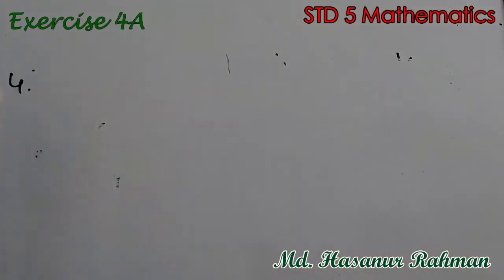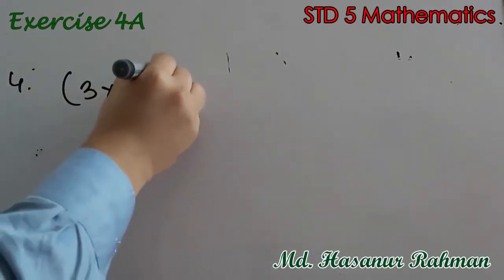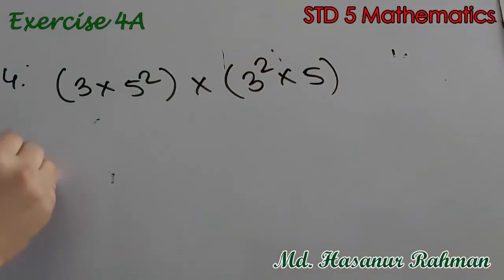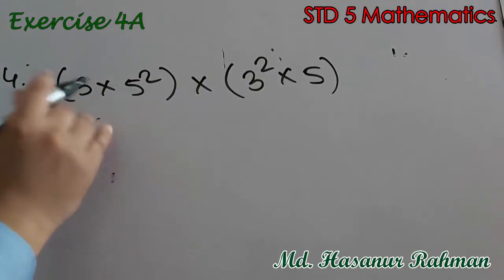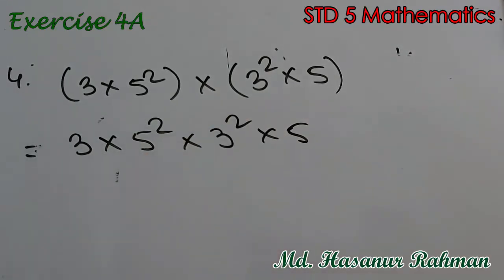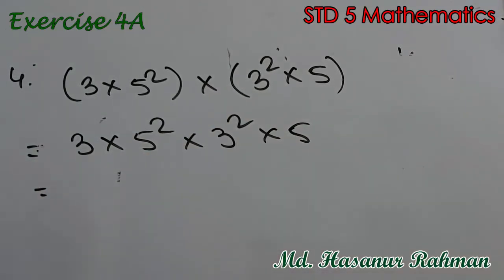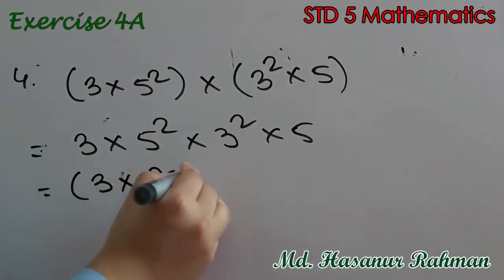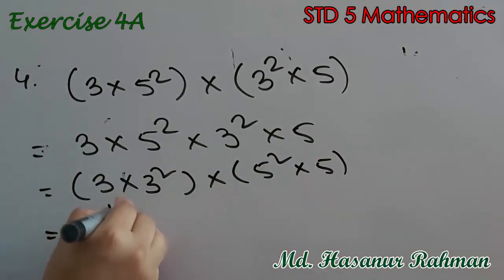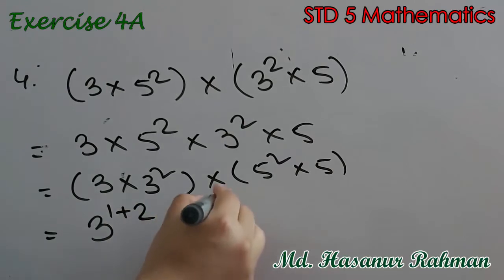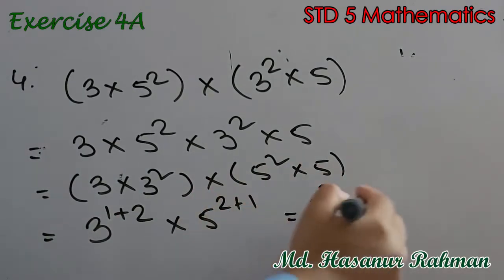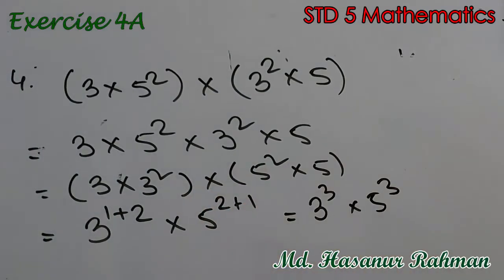Now number 4 says 3 into 5 squared, into 3 squared into 5. If we expand the bracket we can write 3 squared into 5. Now both bases are the same, so we can add the powers: 3 to the power 1 plus 2 into 5 to the power 2 plus 1. That means 3 to the power 3 and 5 to the power 3, and that is the answer of number 4.